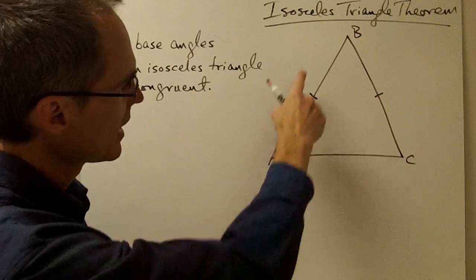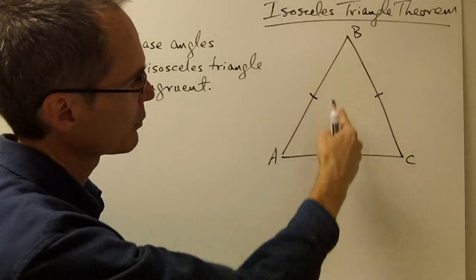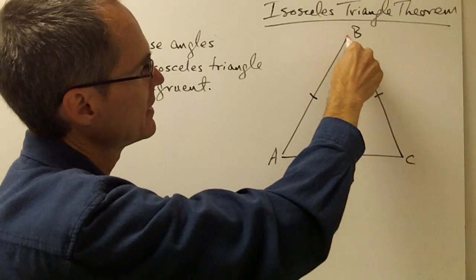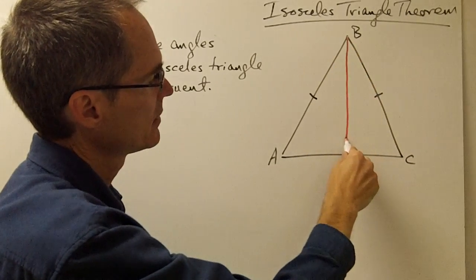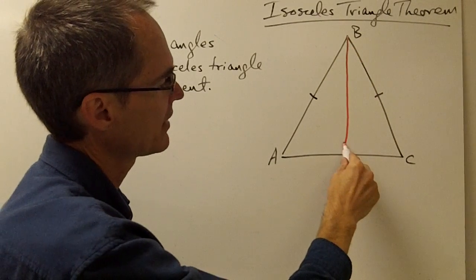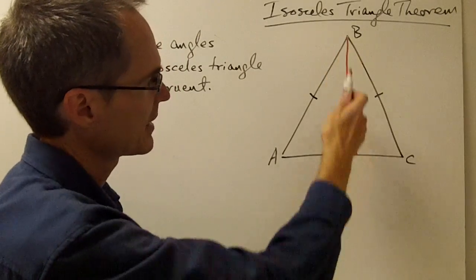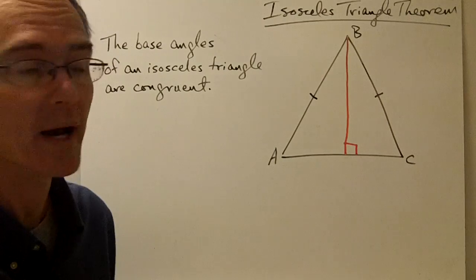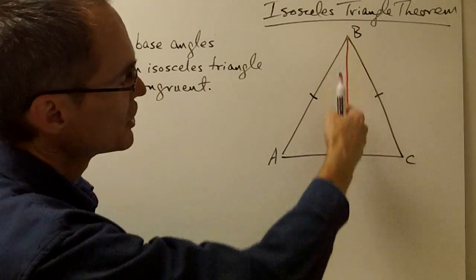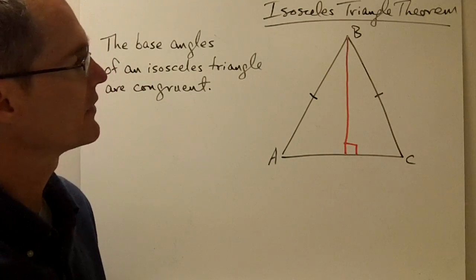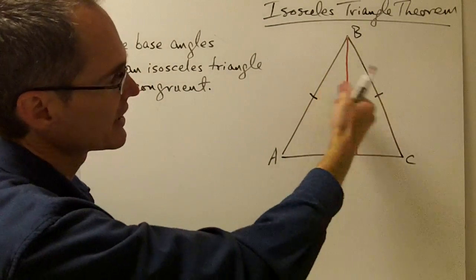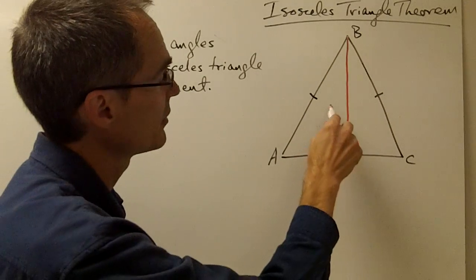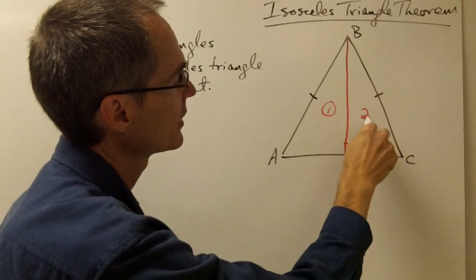The way we're going to do this is take this triangle and draw in an altitude from vertex B. If I draw in this altitude — remember, an altitude is a segment that goes through a vertex of a triangle and forms a right angle — I've essentially split my isosceles triangle into two smaller triangles. Let me call this triangle number one and triangle number two.